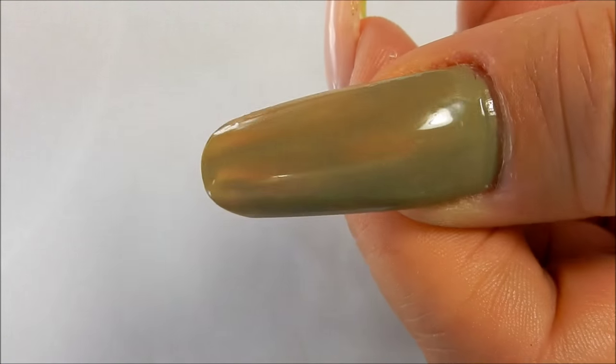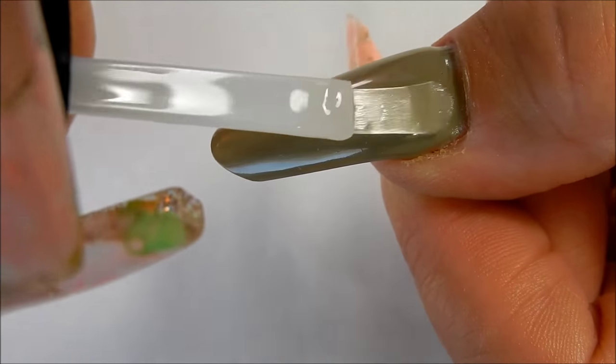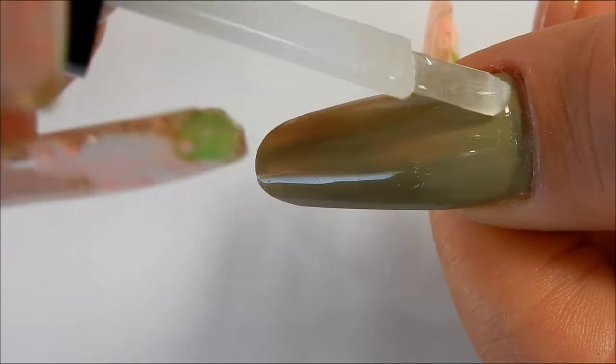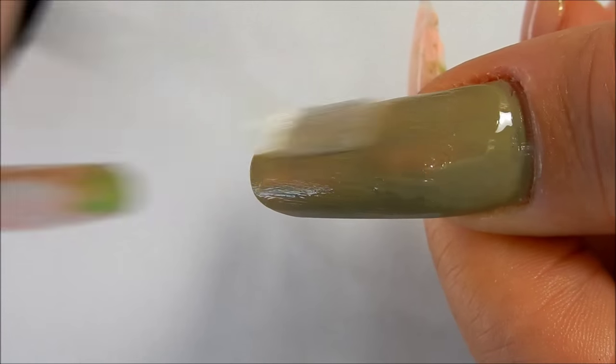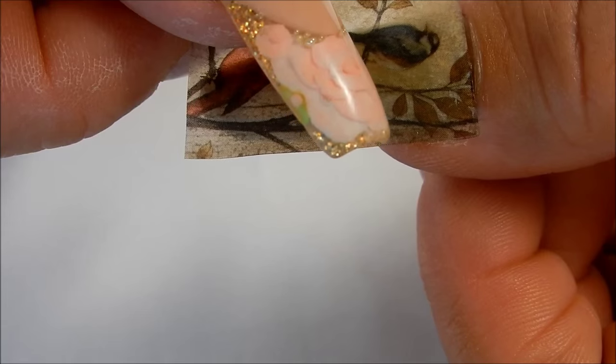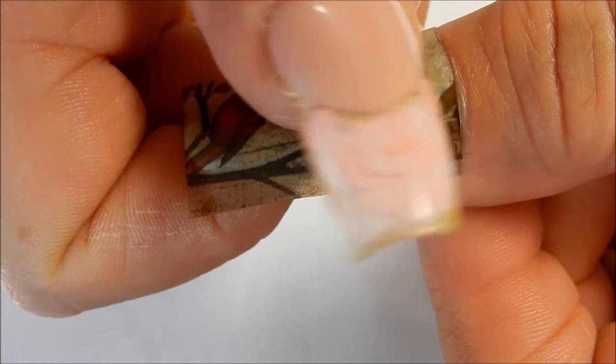To apply the decal, what I like to do is go ahead and add another coat of clear nail polish on top of that. That way you'll be sure that the decal will stick. It doesn't have to be perfect. Position your decal where you want it, make sure it'll fit, and then start pushing it down into the nail.